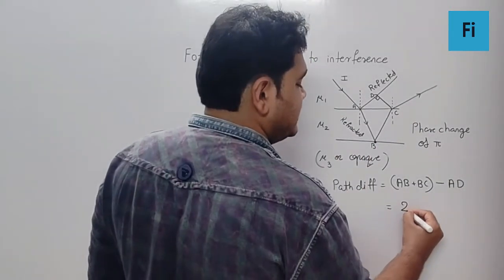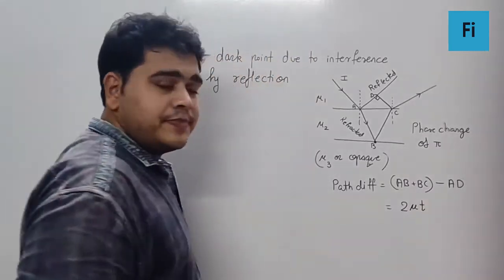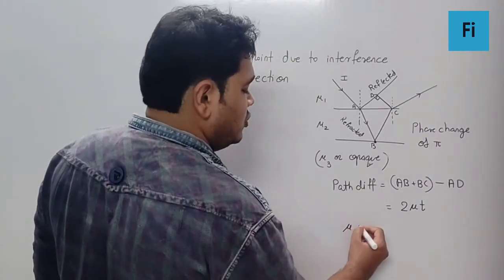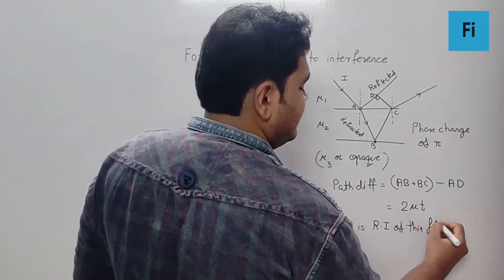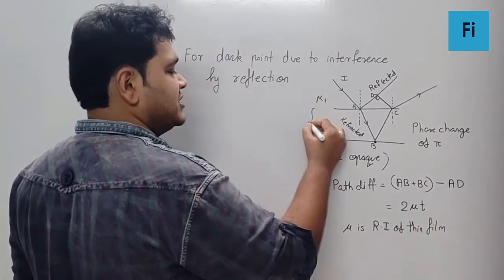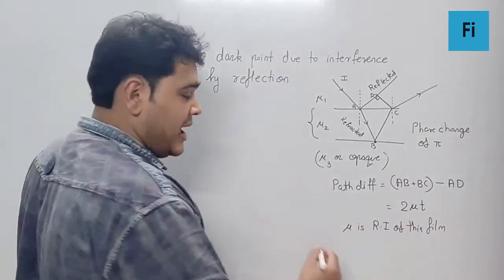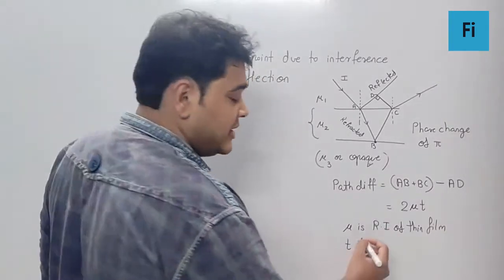Now when you do the geometry behind this, you get the formula as 2μt. Definitely μ is the refractive index of the thin film and t is the thickness of the film.